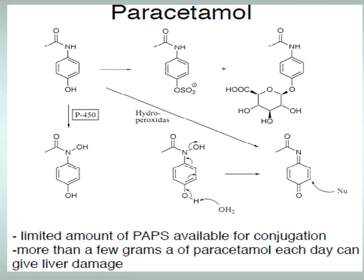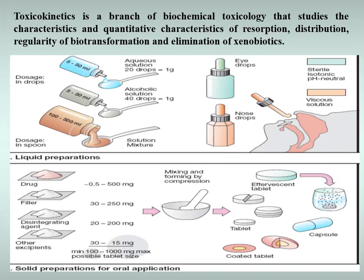Dose is an important factor determining the toxicity of chemicals. Depending on the dose, any chemical can act as both a drug and a poison. From the point of view of toxicological chemistry, it is important to focus on three doses: medicinal, toxic, and lethal. The dose that provides a certain therapeutic effect is called the therapeutic dose. A dose that causes non-fatal pathological changes in the body is called a toxic dose. The dose that kills the body is called the lethal dose.